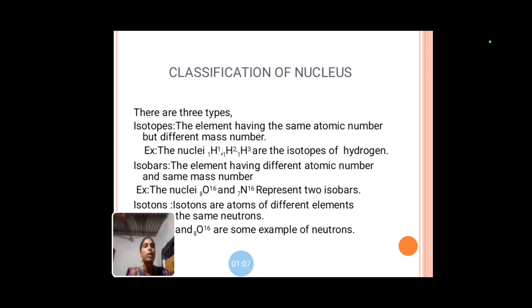Isotones are atoms of different elements having the same number of neutrons. Carbon and oxygen are some examples of isotones.